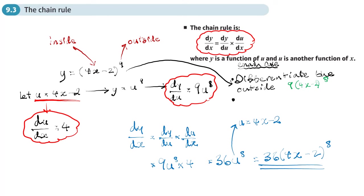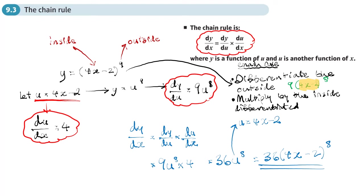Step number 2, the second and final step: multiply by the inside differentiated. Whatever is inside the bracket, differentiate it and multiply by it. Inside the bracket we have 4x minus 2, differentiated that becomes 4. So we take step 1 and multiply by 4, giving 4 times 9 times (4x minus 2) to the power 8, which is 36(4x minus 2) to the power 8 — exactly the same answer as before.